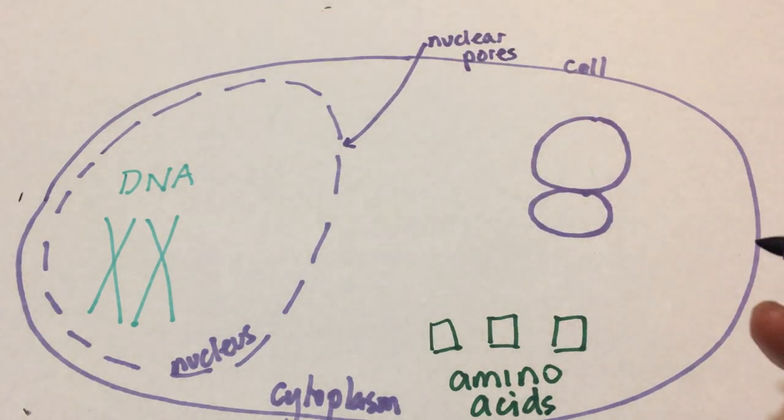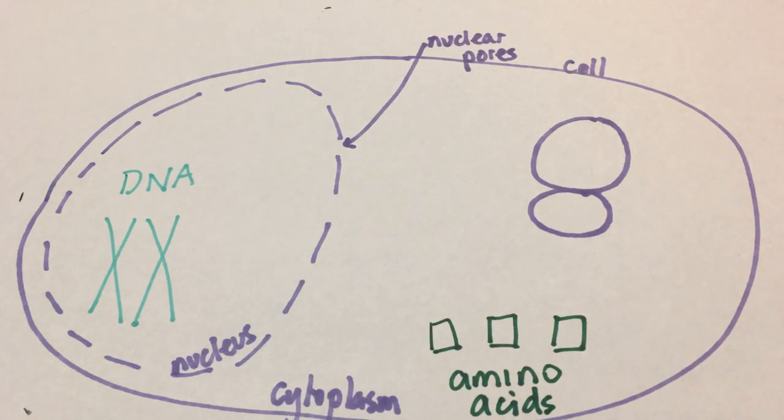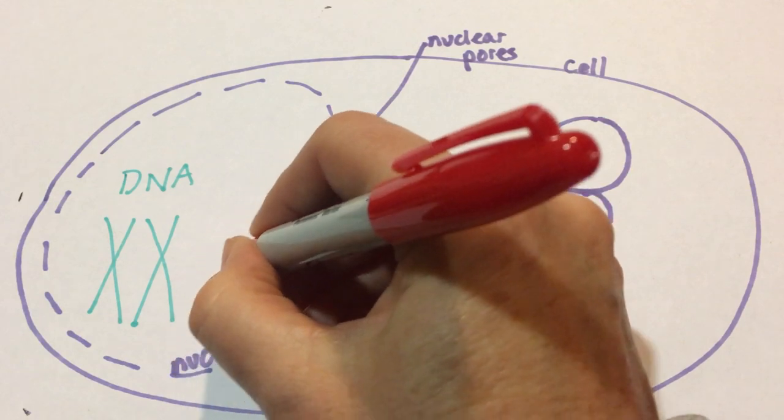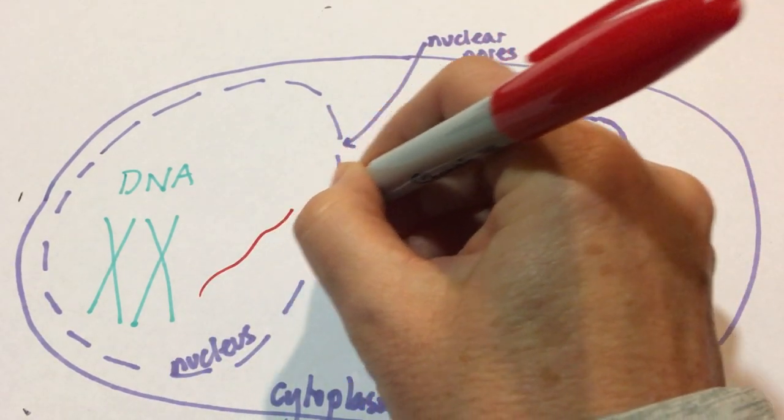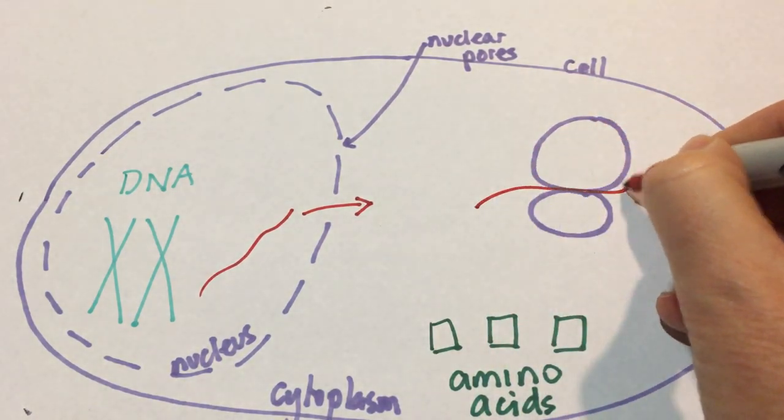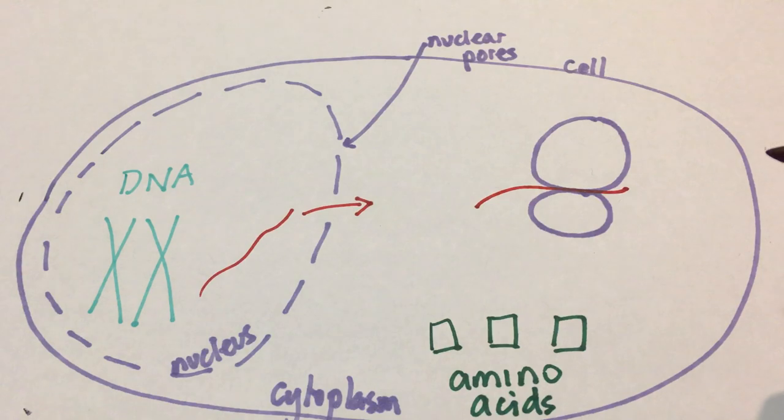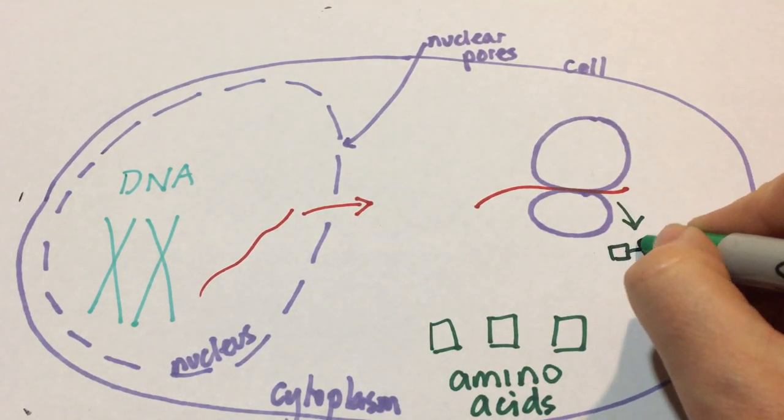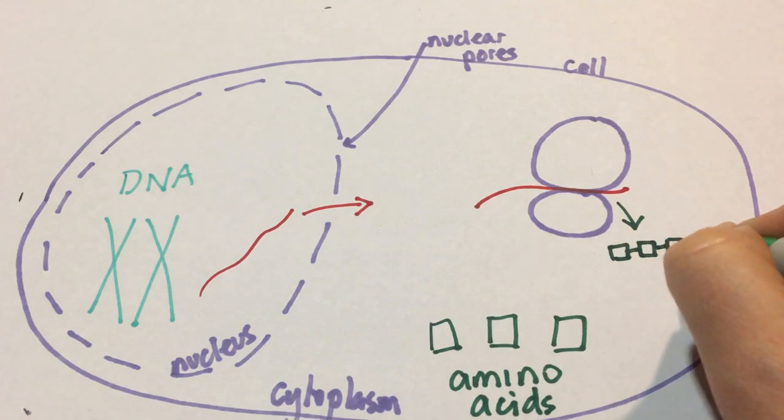So we're going to need a messenger molecule, something which is able to pick up the information from the DNA, leave the nuclear pore and go to the factory, to the ribosome in the cytoplasm, and then be used to actually make a polypeptide with all our amino acids joined together.